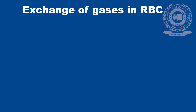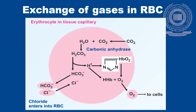Similarly, this kind of exchange also happens in the tissues. In the tissues, the carbon dioxide, which is a waste product, binds with water to form carbonic acid in the presence of carbonic anhydrase. This dissociates to form H⁺ ion and bicarbonate ion. The H⁺ ion combines with hemoglobin, and the protonated hemoglobin has less affinity for oxygen. As a result, oxygen is released from the hemoglobin and delivered to the cells.